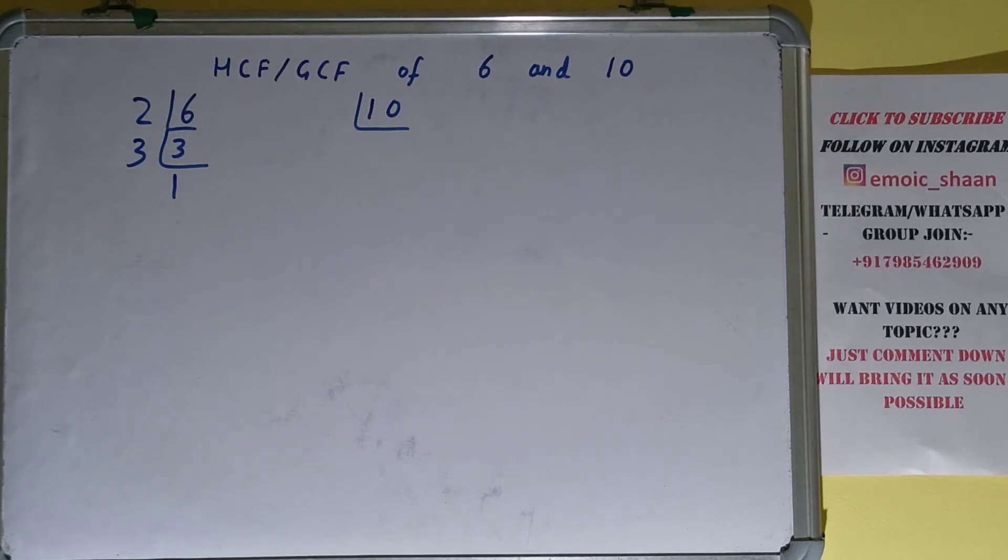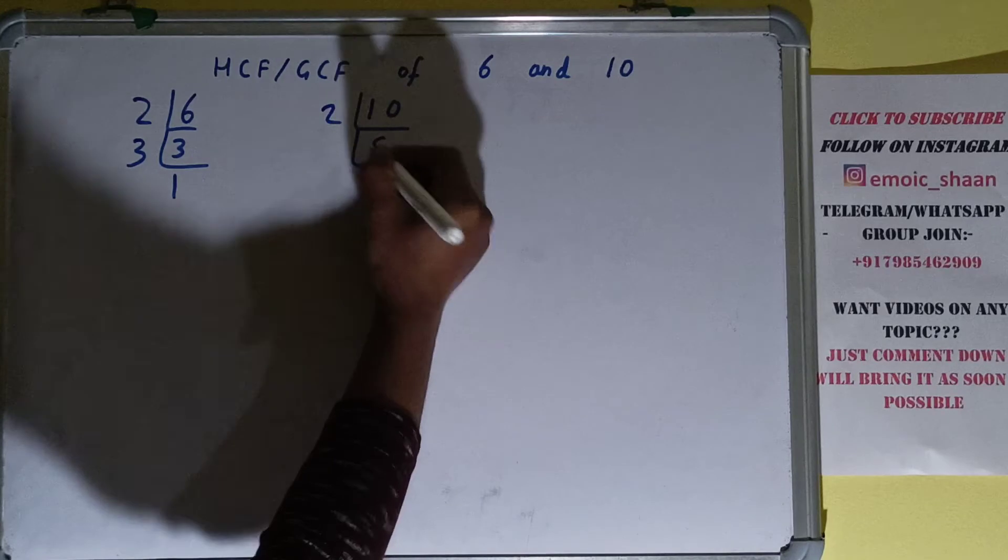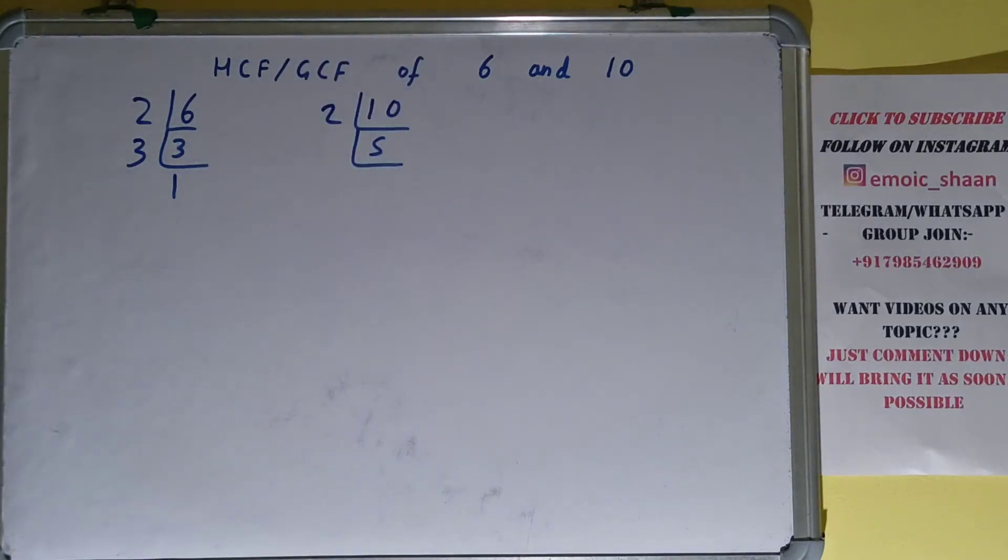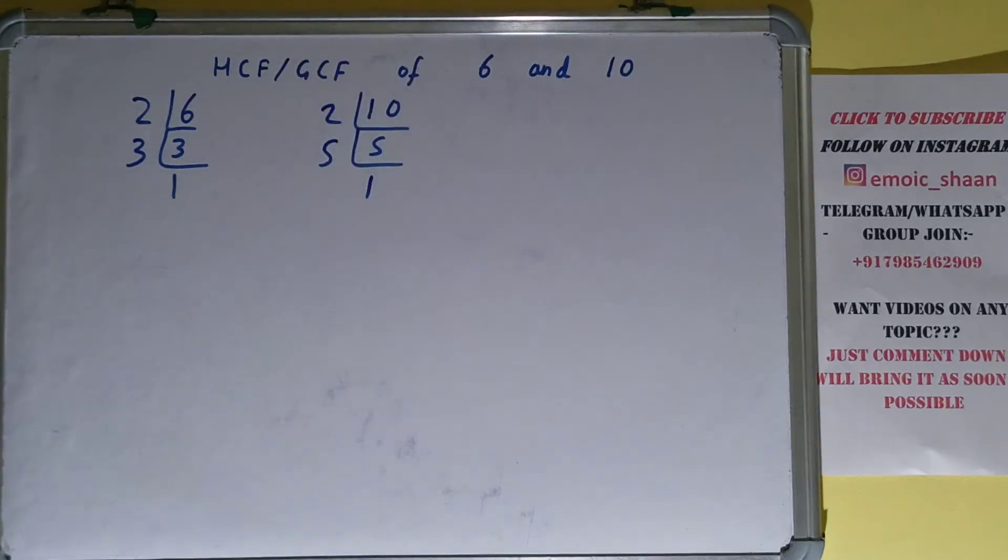Let's start with 10. Is 10 divisible by 2? Yes it is. We'll get 5. Is this 5 divisible by 2? No. 5 is a prime number. So it is divisible by itself only and we'll get 1. So we are done with the prime factorization step.